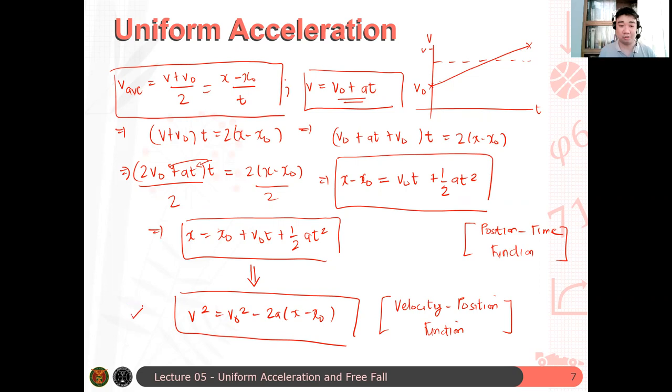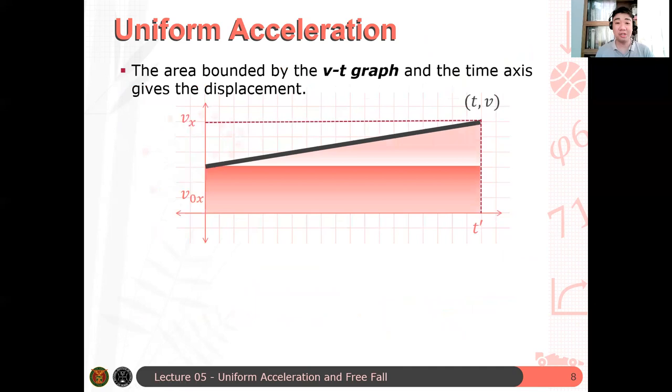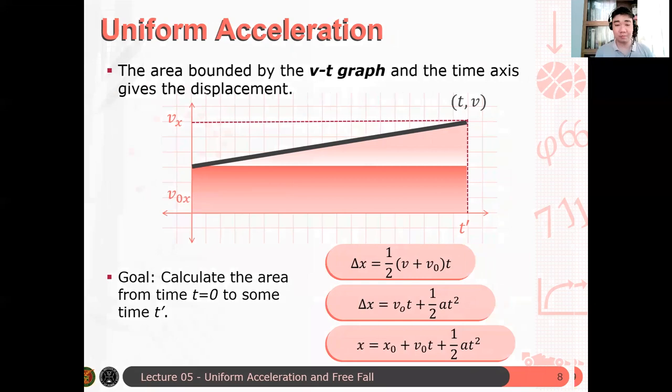Are there any questions? The point here is, another approach is to determine the area under the curve of the VT graph. So, when you determine the area under the curve of the VT graph, you will get the position-time function. And you get that. These are the equations that we will be having. So, it's like finding the area of a trapezoid. And, from that, we can determine your usual position-time kinematic equations.